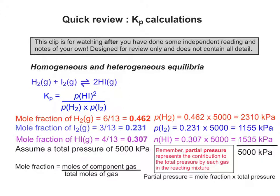So now we can work out Kp for this particular reaction. So we end up with 1535 squared over 2310 times 1155.